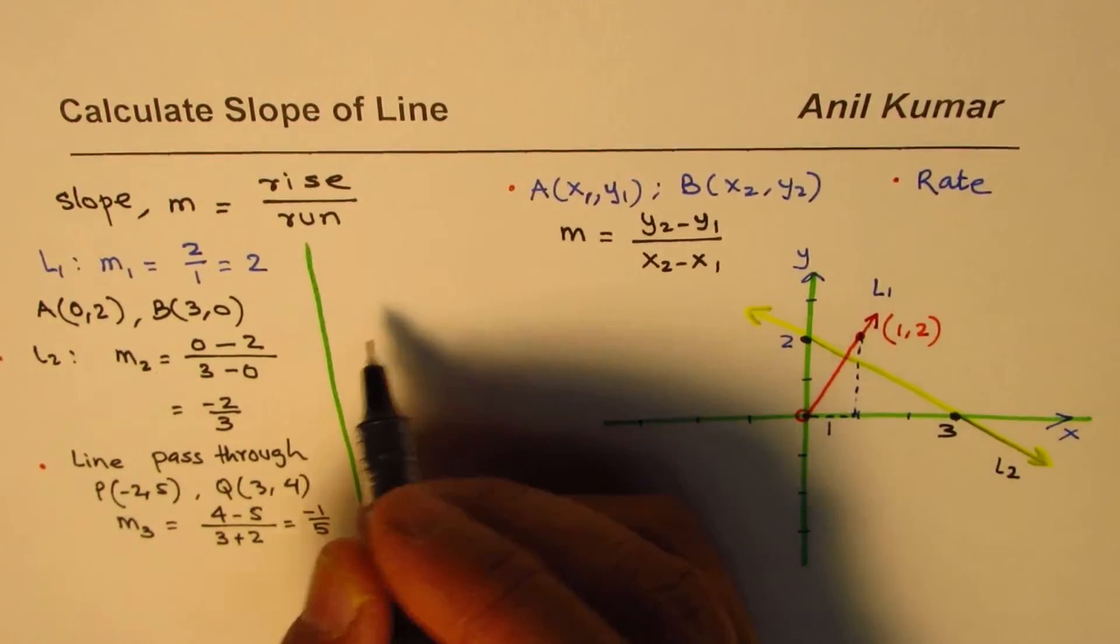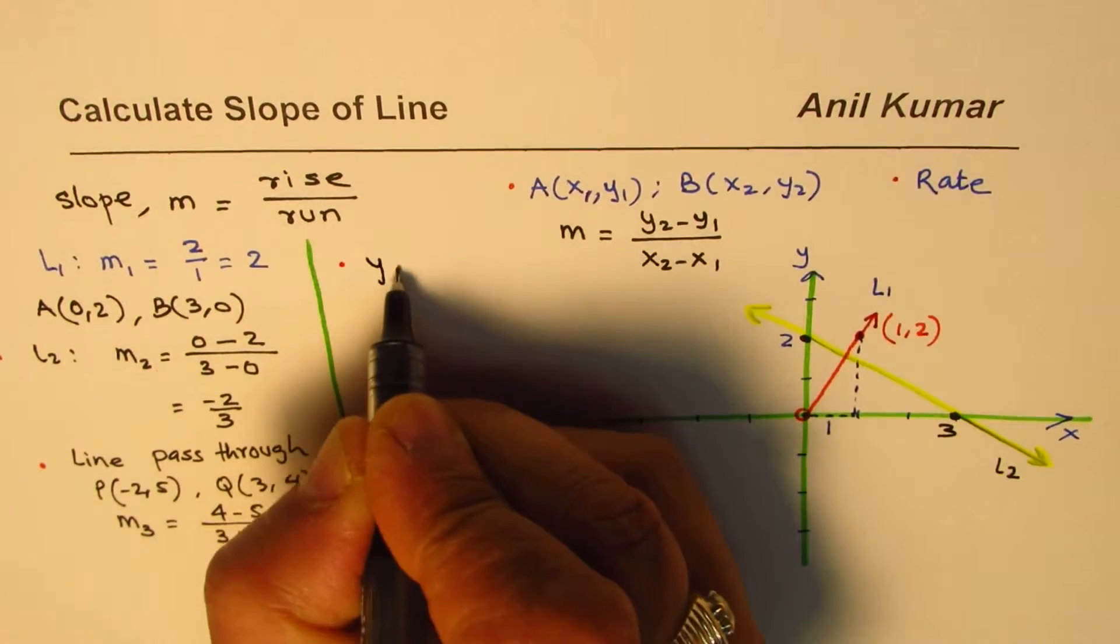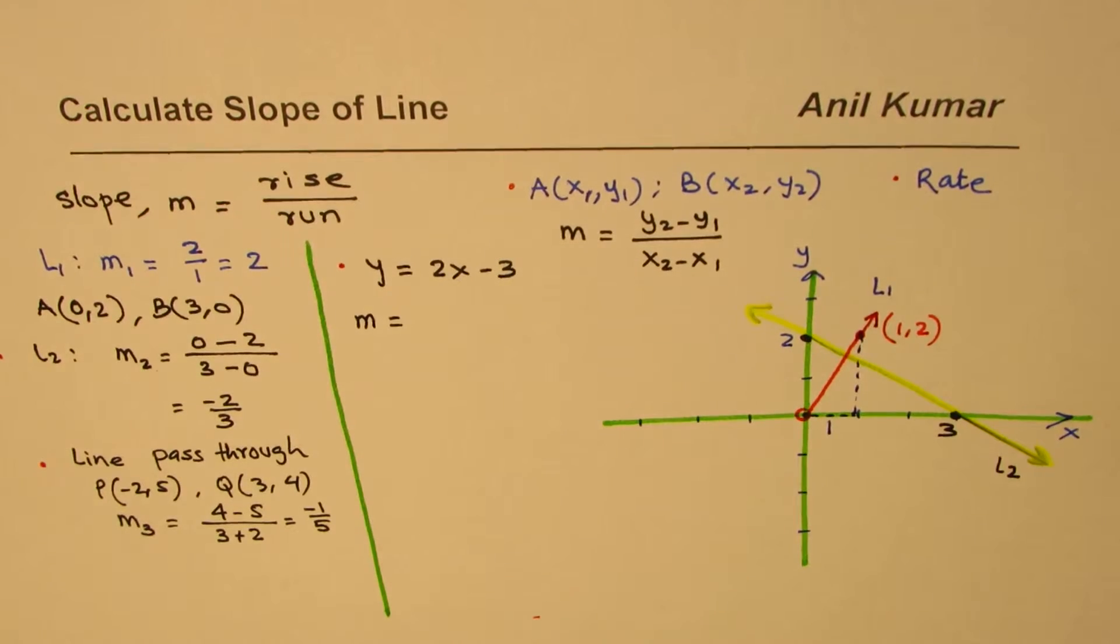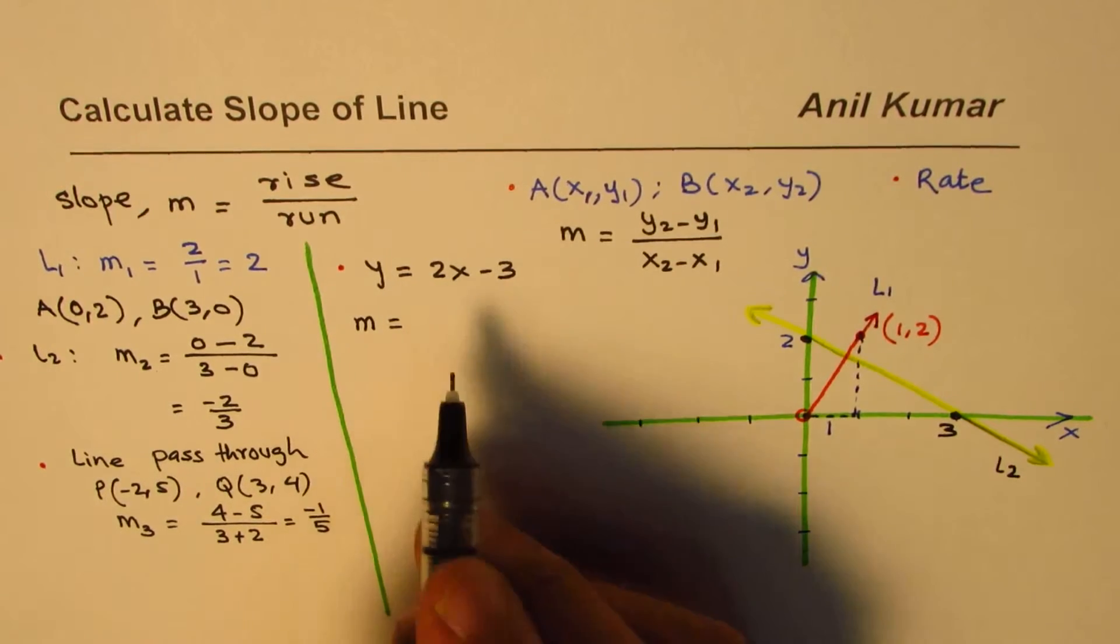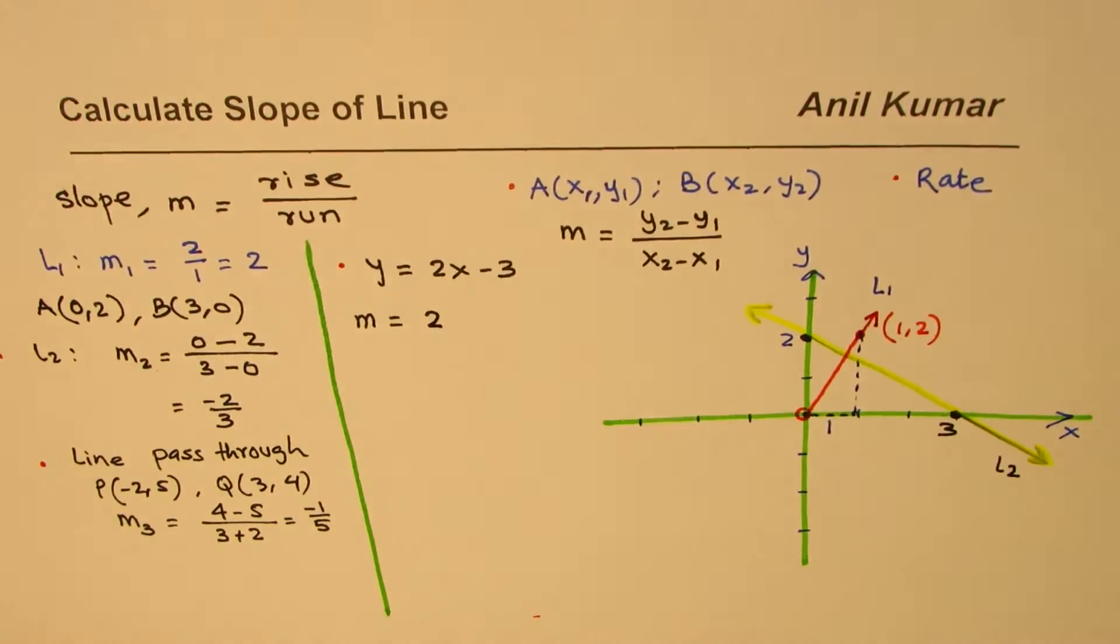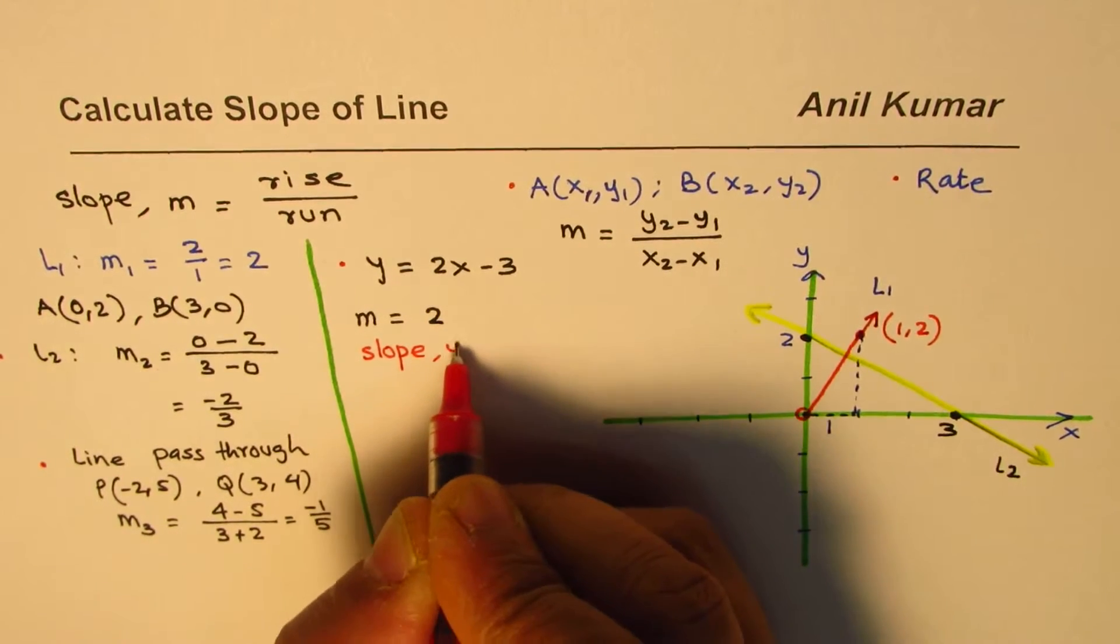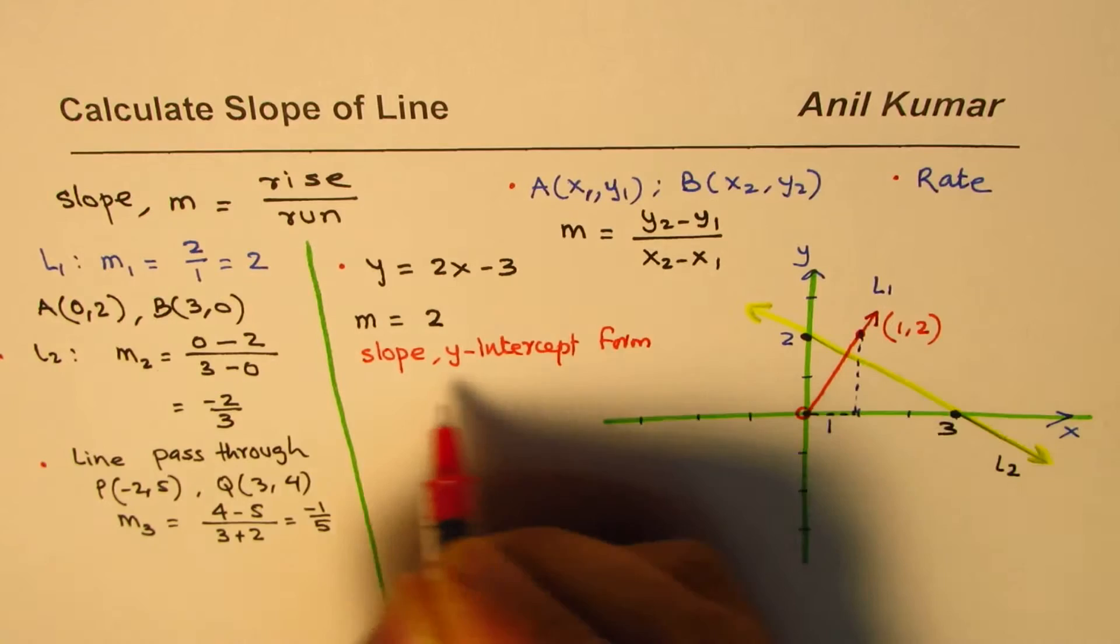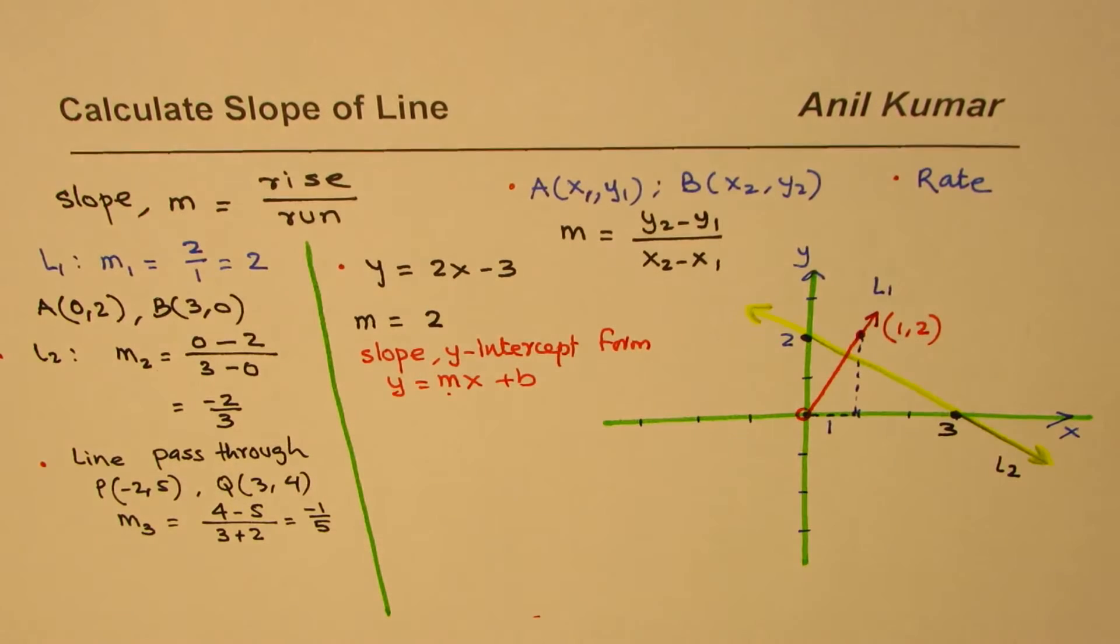Now let me take up the equation of a line itself. Let's say we are given the equation of the line as y equals 2x minus 3, and we need to find the slope m. Normally, if a line is given in this form, the slope is the coefficient of x, and we can straight away write down slope as 2. Since this form of a line equation is called slope-intercept form, the coefficient of x is the slope which you can directly read.